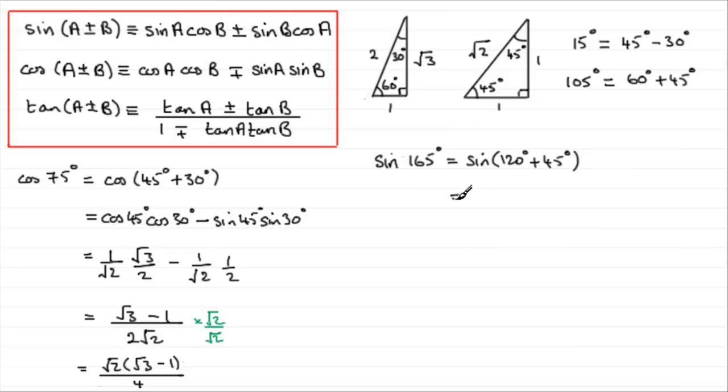Sine of A plus B is sine A cos B plus sine B cos A. So this is going to be the sine of 120 degrees, sine A, times cos B, cosine of 45 degrees. Then we have plus sine B cos A, sine of 45 degrees and then cosine of 120 degrees.